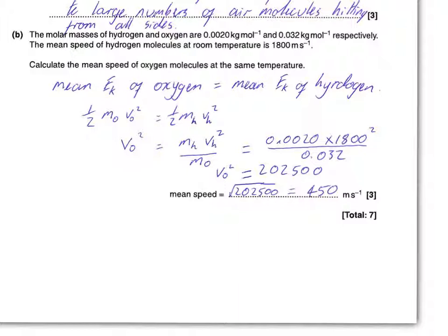Having understood the physics, it becomes a simple situation where we have to substitute in values to solve the problem. So a half mv squared for oxygen equals a half mv squared for hydrogen, rearranging and substitution and a square root leading to the final answer.